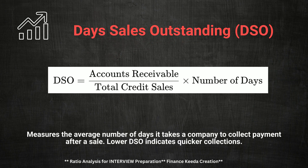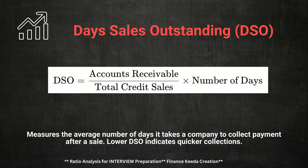Moving on, let's discuss Days Sales Outstanding, or DSO. This ratio measures the average number of days it takes a company to collect payment after a sale has been made. A common interview question might be: what does a high DSO indicate about a company's collection process? A high DSO can signal potential issues with cash flow or inefficiencies in the collection process, which could lead to liquidity problems. Conversely, a low DSO indicates that a company is efficient in collecting its receivables. Interviewers often look for candidates who can not only calculate DSO, but also interpret its implications for a company's financial health.